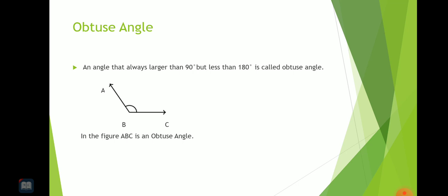An angle that is larger than 90 degrees but less than 180 degrees is called an obtuse angle. Here you can see that ABC angle is less than 180 degrees but larger than 90 degrees. So in the figure ABC is an obtuse angle.